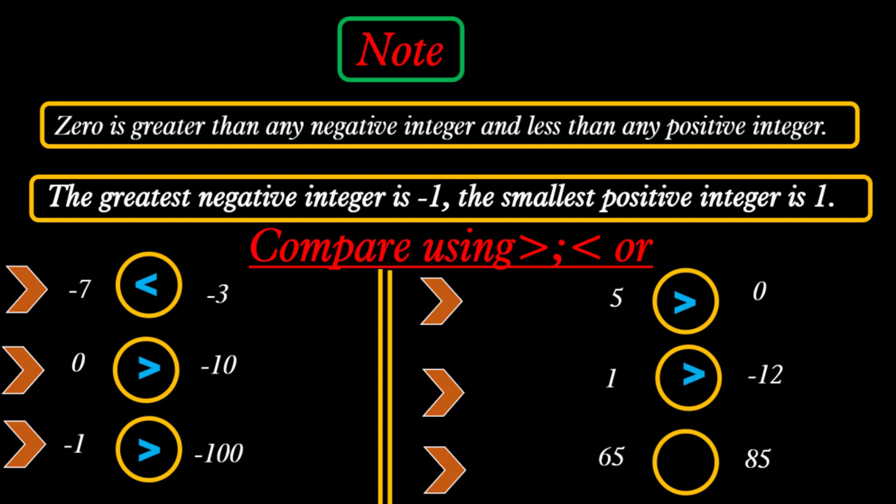5 is greater than 0, because any positive integer is greater than 0. 1 is greater than negative 12, because any positive integer is greater than any negative integer. Finally, 65 is less than 85, because 65 lies to the left of 85 on the number line.